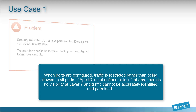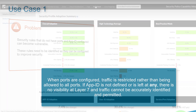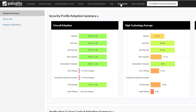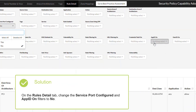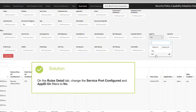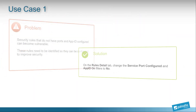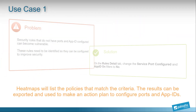AppID accurately identifies traffic at Layer 7 and permits the traffic. If AppID is not defined or left at any, then there is no visibility at Layer 7 to accurately identify and permit traffic. To identify rules with unconfigured ports in AppIDs, change the service port configured in AppID on Filters to No on the Rules Detail tab and apply filters. Heatmap specifically lists the policies that match this criteria, which can be exported and made into an action plan to configure the ports and AppIDs.